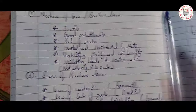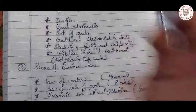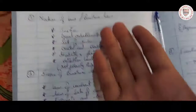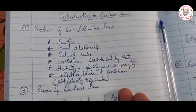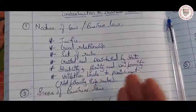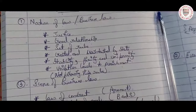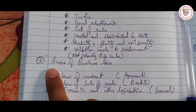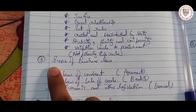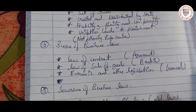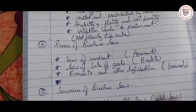Violation leads to punishment. Violation means not following the rules, and that will lead to punishment. Businesses must follow these rules just as any person must follow them. That covers the nature of business law.